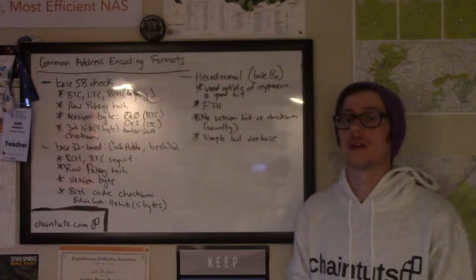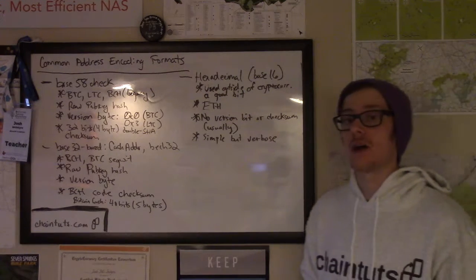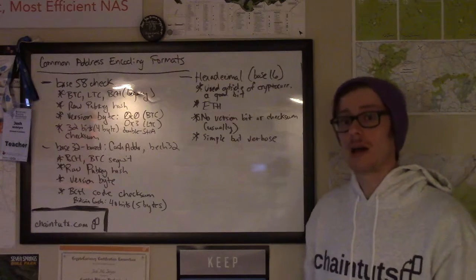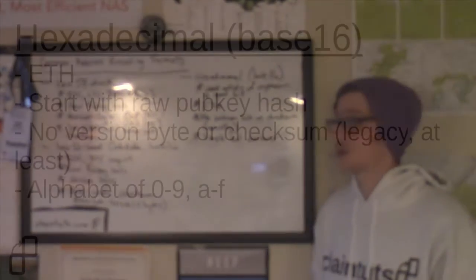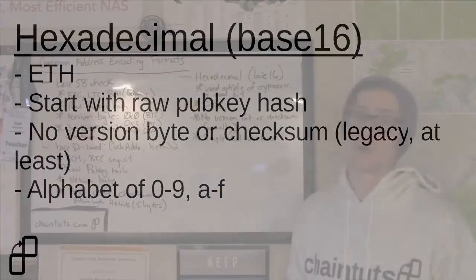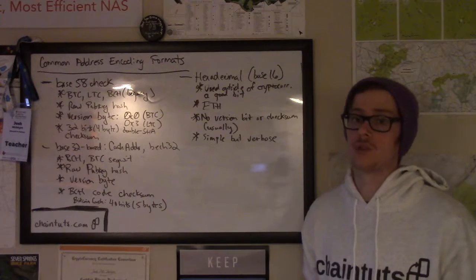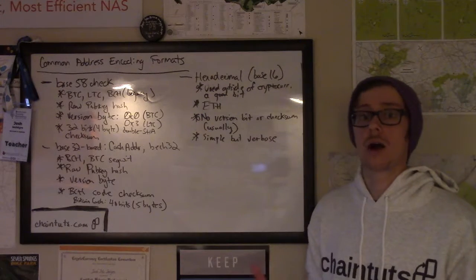The final commonly seen address encoding format is hexadecimal, or Base16. This is a very common way to encode data in computer science and programming well outside the realm of cryptocurrency — an encoding scheme that's been around for a long time. When it comes to cryptocurrencies, the Ethereum developers decided this was the system they wanted to use, so any Ethereum address you see is going to be encoded in Base16. With ETH addresses, there is no version byte or checksum usually. The original Ethereum addresses had no checksum at all, so you could use all capital letters or all lowercase letters and it didn't matter. However, there is a newer checksum scheme that uses a mix of capital and lowercase hex letters, which we won't cover in this tutorial today.